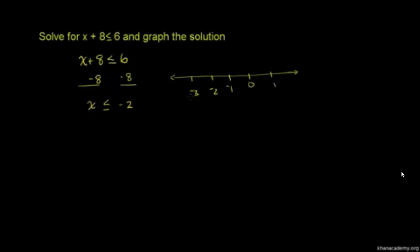We could keep going to the left. We want all of the x's that are less than or equal to negative 2. Since it can be equal to negative 2, we'll put a filled-in dot right here at negative 2 and shade all values less than that. If it was just less than — if there wasn't the equal sign — we would have an open dot. But since there's less than or equal to, we close this dot.